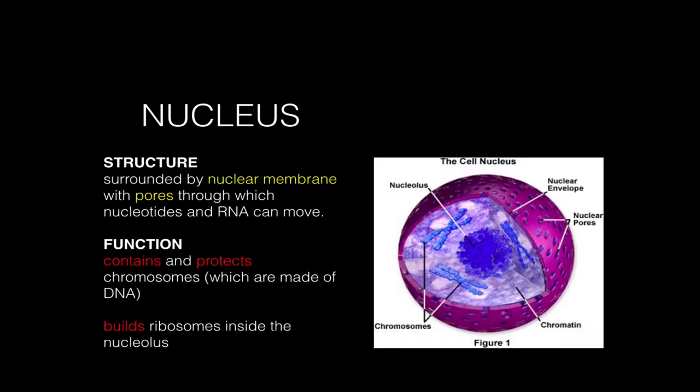Probably the most familiar and most important of all the organelles is the nucleus. We're going to talk about structure first, then function, and then look at an analogy to help you remember the relationship between structure and function. The nucleus is a bag made of nuclear membrane material with holes or pores in it through which things can pass. Because of what the nucleus does, the material moving in and out will be nucleotides, which are used to build DNA and RNA. RNA can move out of the nucleus, but DNA does not move out of the nucleus.